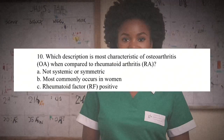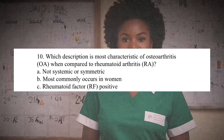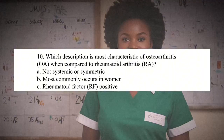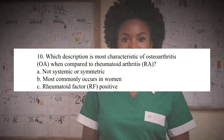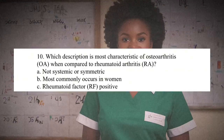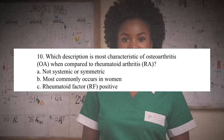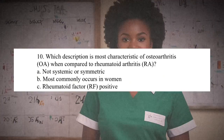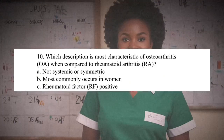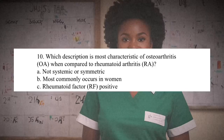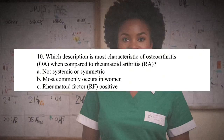Question 10: Which description is most characteristic of osteoarthritis (OA) when compared to rheumatoid arthritis (RA)? A. Not systemic or symmetric. B. Most commonly occurs in women. C. Rheumatoid factor (RF) positive. The correct answer is A. OA is not systemic or symmetric, and morning joint stiffness resolves in about 30 minutes. Rheumatoid arthritis (RA) is RF positive and characterized by being systemic and affecting small joints symmetrically, with morning joint stiffness lasting 60 minutes to all day.